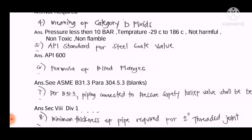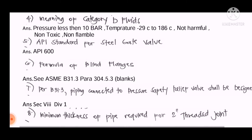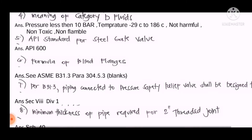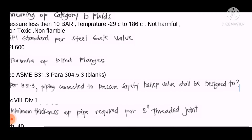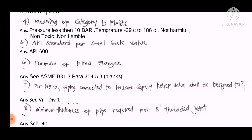Question number seven: As per B31.3, piping connected to a pressure safety relief valve shall be designed to what? The answer is we will refer to ASME Section 8, Division 1.